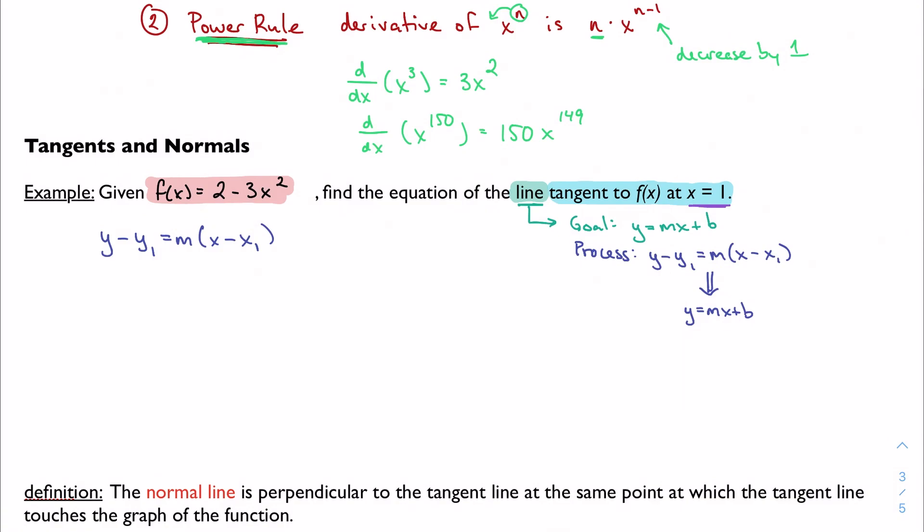So y minus y1 equals m times x minus x1. We might not know where to go from here right now because we don't really know how to plug anything in. Well, let's see. I have an x. And if I need a point, right, I need a y1 x1. Can I find that? Well, let's call x1 equal to 1. Let's use the information that I'm given. So y1 then would just be whatever happens when I get f of 1, when I plug 1 in. So 2 minus 3 times 1 squared is just going to give me negative 1. So now I have a point.